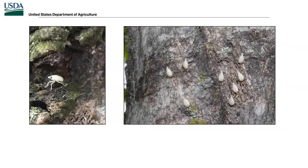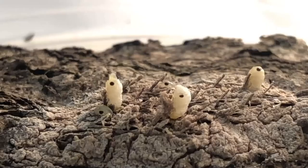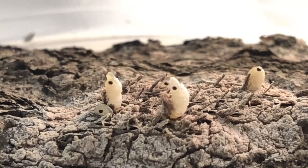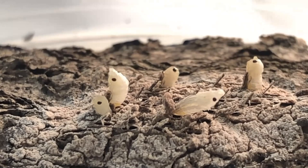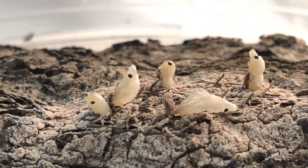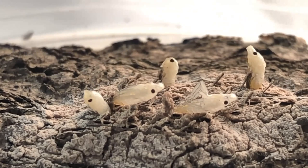When SLF first hatch and have not yet sclerotized, they are completely white. Similarly, when molting between instars they appear white before hardening off. A video from the Massachusetts lab shows an egg mass hatching — newly emerged nymphs are white, and hatched eggs leave small exit holes distinguishable from the trap-door opening of normal hatch.